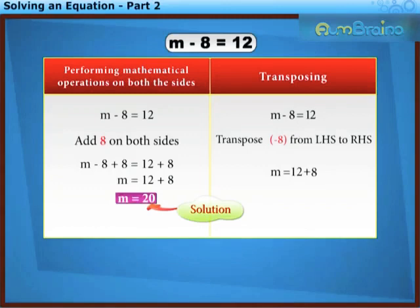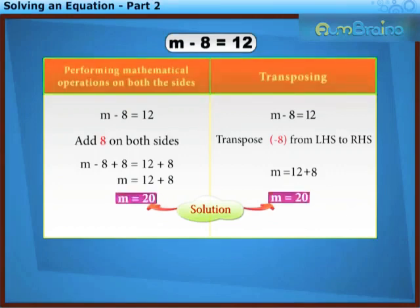Because on transposing minus 8 on LHS, it becomes plus 8 on RHS. So the solution is m is equal to 20. We observe that the final solution is the same from both the methods.